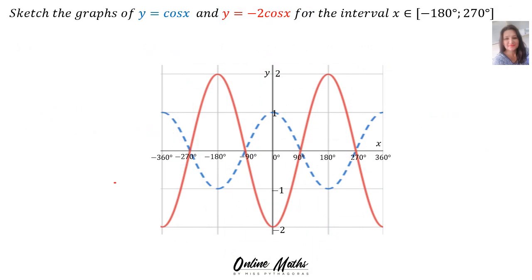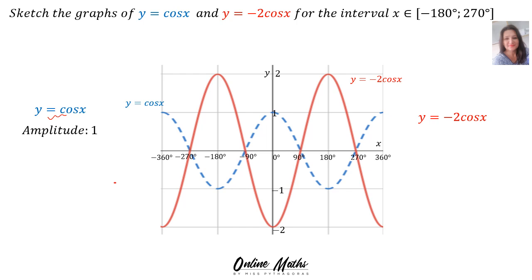Sketch the graphs of y = cos x and y = minus 2 cos x for the interval x is an element of minus 180 degrees up to 270. The blue graph is y = cos x, the normal cos x graph, and the red graph is y = minus 2 cos x. Since A's value is negative, your graph was reflected about the x-axis. Back to the blue graph, y = cos x: A's value is invisible 1, therefore the amplitude is 1. On the red graph, y = minus 2 cos x, the amplitude will be positive 2. Remember, amplitude is always positive.